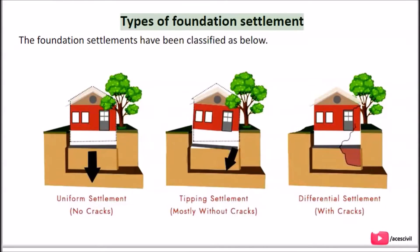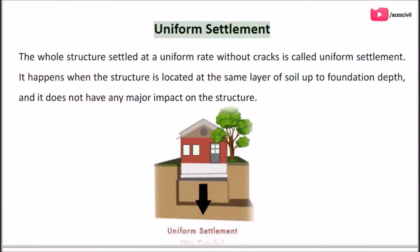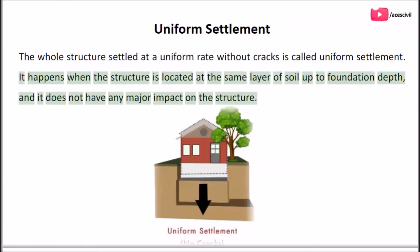Types of foundation settlement. The foundation settlements have been classified as below. Uniform settlement: the whole structure settles at a uniform rate without cracks. It happens when the structure is located at the same layer of soil up to foundation depth, and it does not have any major impact on the structure.